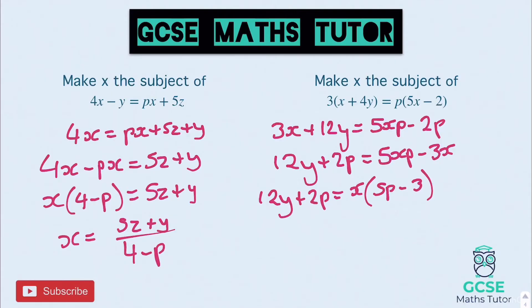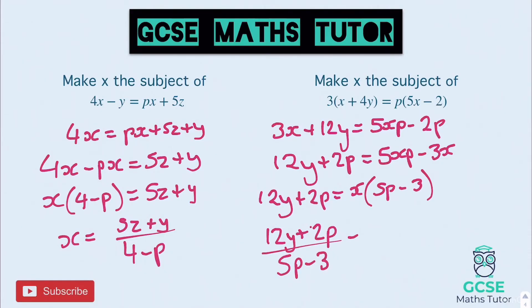Then again, just dividing by the bracket, so 12y plus 2p all over 5p minus 3 equals x.